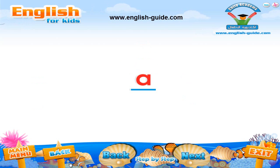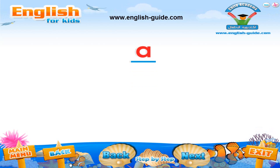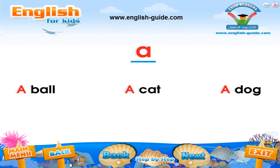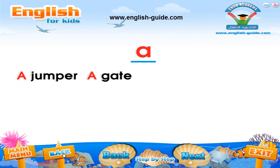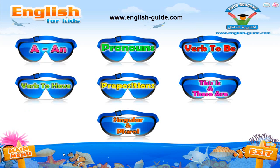But if the word begins with a consonant, which is all the other letters in the alphabet, we use the word 'a' before it. For example: a ball, a cat, a dog, a jumper, a gate, a house, a fan, a kite.